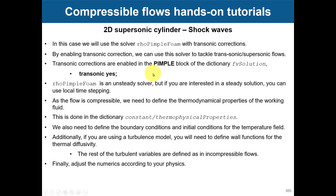We're going to use rho pimpleFoam for compressible flow with transonic corrections. We used this solver in tutorial one without mentioning this correction, and also for low speed flows. The difference for high speed shock waves is that you need to enable the transonic correction in the pimple block of the fvSolution, which is by default set to no. When you enable it, corrections are added and you can solve high speed flows.